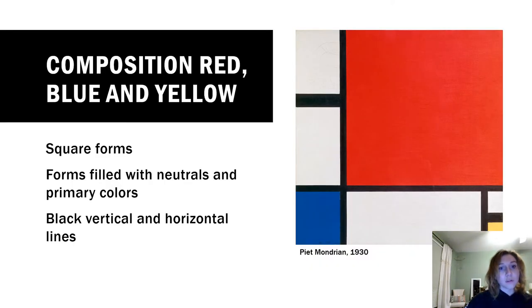The first work I included was by Mondrian because he was a prominent figure and influencer in the De Stijl movement. We can see this work has square forms as well as the primary colors of blue, yellow, and red, along with the black vertical and horizontal lines we saw in the example from the last slide.